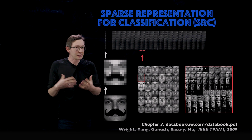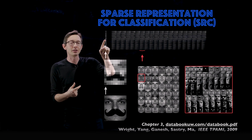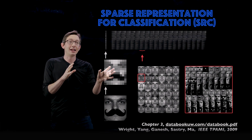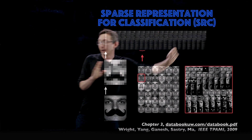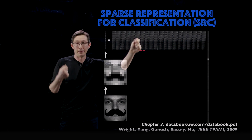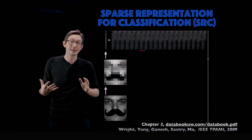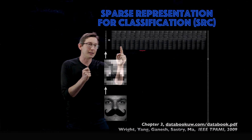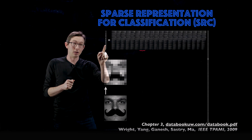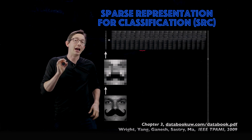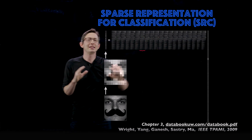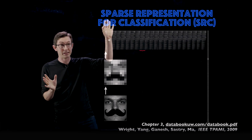You might wonder why we down-sample — it seems like we're throwing away information. The trick is that we can use sparse regression and ideas from compressed sensing when this vector has fewer rows than the number of columns in our library. So we must down-sample our high-resolution image so that it has fewer rows than columns in the library, making this an underdetermined regression problem — very similar to compressed sensing.